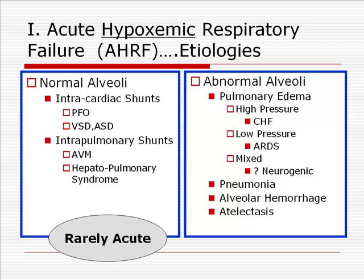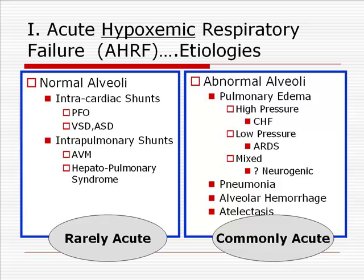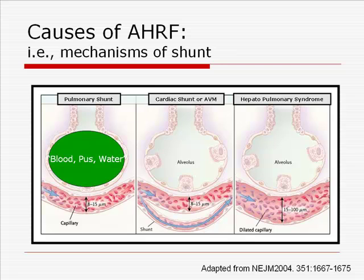The normal alveoli disease processes rarely present acutely, whereas the diseases associated with abnormal alveoli are commonly encountered in the hospitalized patient. Graphically, the mechanisms of shunt can largely be grouped into those associated with abnormal alveoli containing blood, pus, or water — as in alveolar hemorrhage, pneumonia, or pulmonary edema. Conversely, normal alveolar causes of shunt include cardiac shunts or AVMs, where a distinct path from the right side of the circulation to the left side occurs without passing by the proximity of an alveolus.